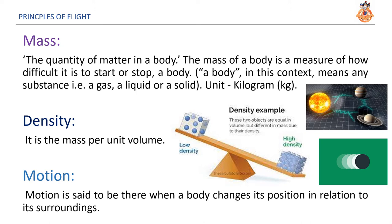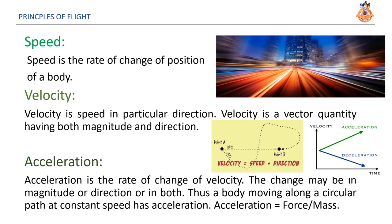Density. It is the mass per unit volume. Motion. Motion is said to be there when a body changes its position in relation to its surroundings. Speed. Speed is the rate of change of position of a body. Velocity. Velocity is speed in a particular direction. Velocity is a vector quantity having both magnitude and direction. Acceleration. Acceleration is the rate of change of velocity. The change may be in magnitude or direction or in both. Thus, a body moving along a circular path at constant speed is also accelerating as it is changing its direction.